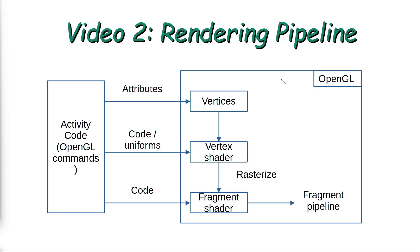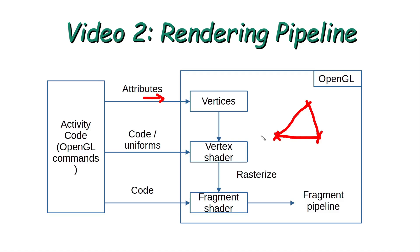For example, if we want to draw a triangle, we start by defining three vertices which represent the triangle and then we send them to OpenGL. The second step on the OpenGL side is to run the vertex shader. This is a custom written program which will be compiled and run on the GPU, and it will run for each one of the three vertices to define properties like position.